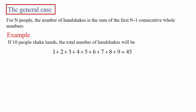For example, if there are 10 people to shake hands, the total number of handshakes will be all the numbers from one up to nine added together, which in this case gives us 45.